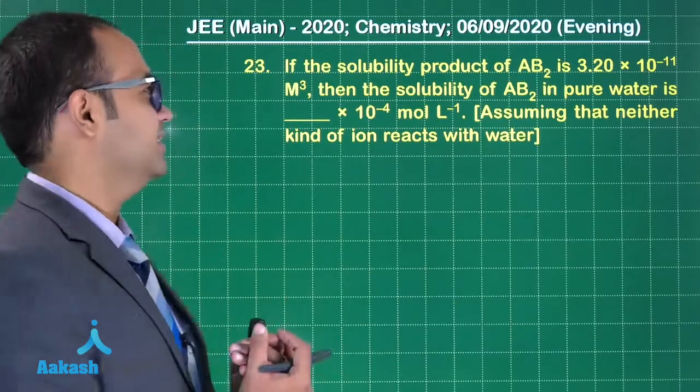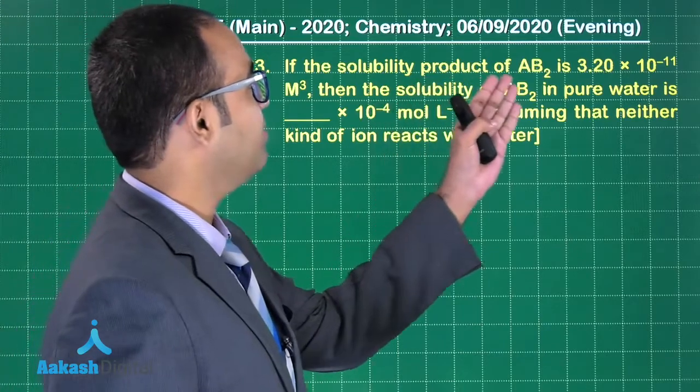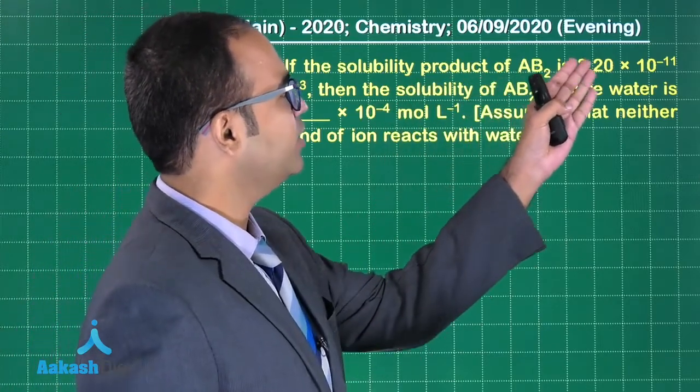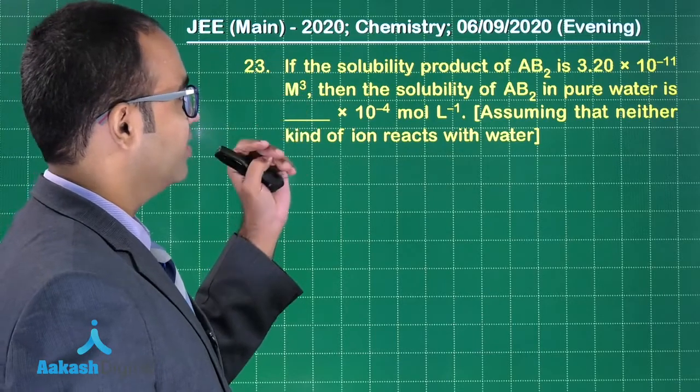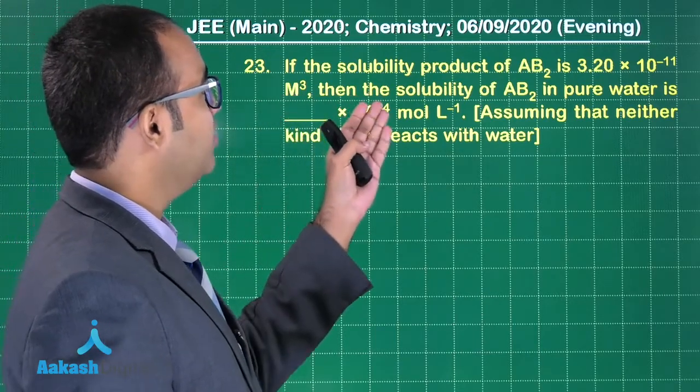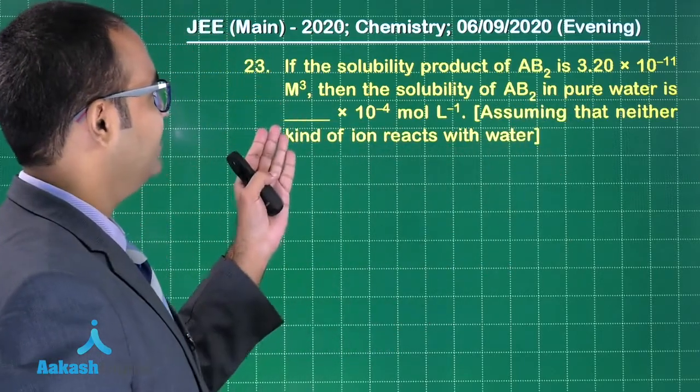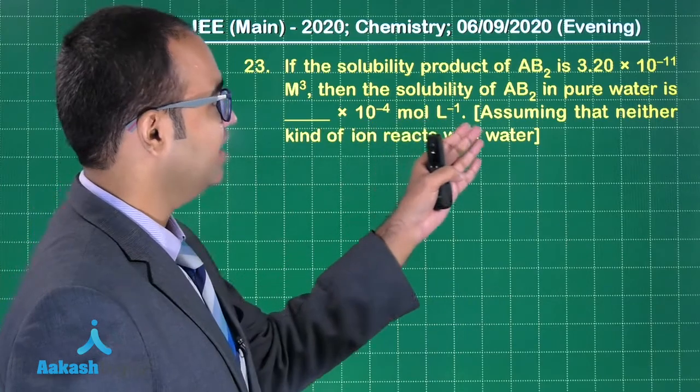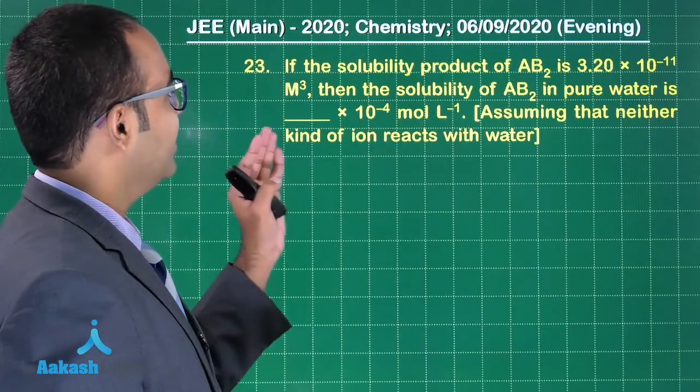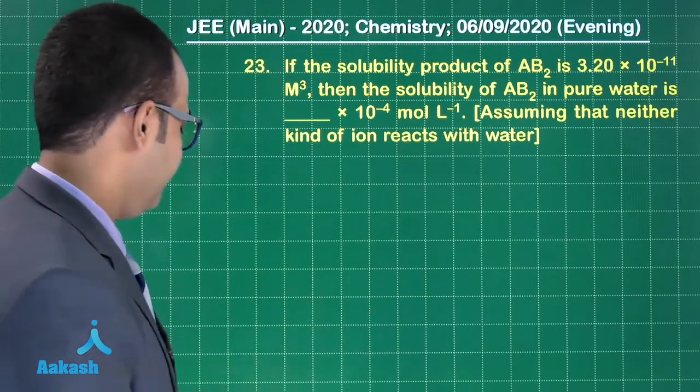Let us solve question number 23. If the solubility product of AB₂ is 3.2 × 10⁻¹¹ M³, then the solubility of AB₂ in pure water is ___ × 10⁻⁴ mol/L, assuming that neither kind of ion reacts with water.